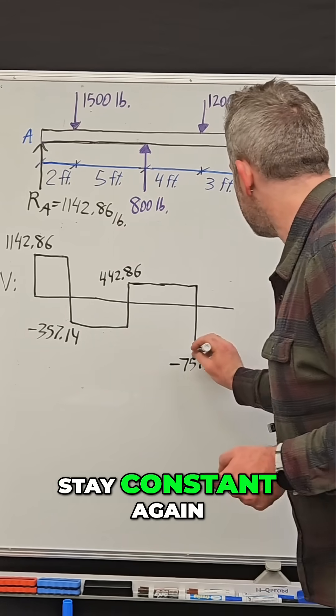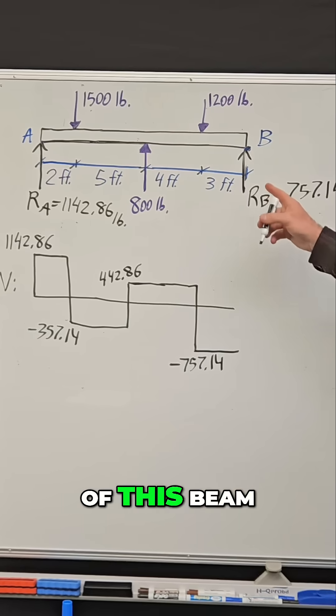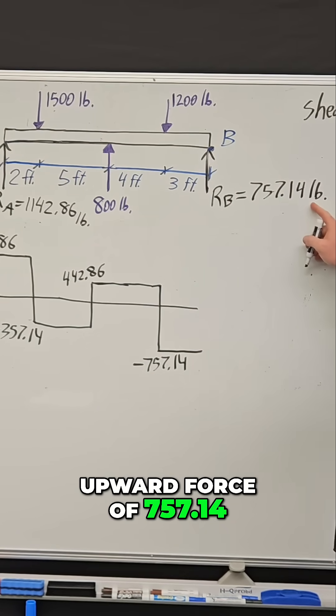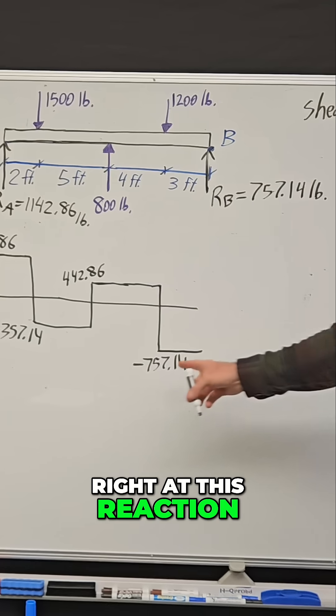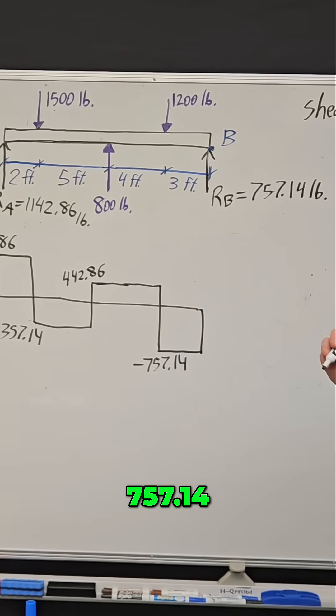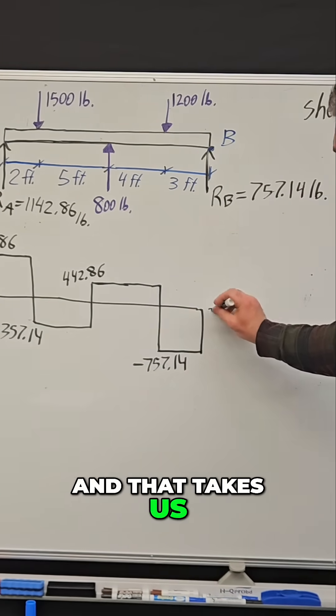That will stay constant until the end. What happens at the end of this beam? Well, there's suddenly an upward force of 757.14 right at this reaction, which means this is going to jump by exactly 757.14, taking us back to zero again.